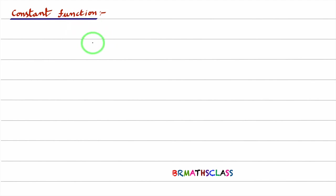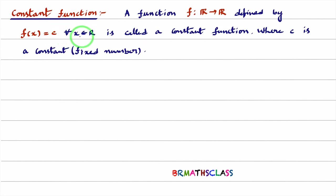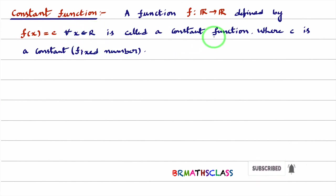First we will see the definition of constant function. A function f from R to R defined by f(x) = c, for any x belonging to R, is called a constant function. Where c is a constant.